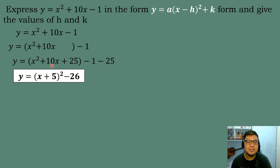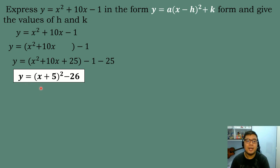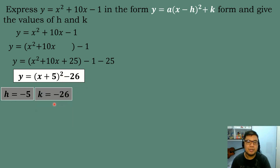Now we factor x² + 10x + 25. Take the square root of x², which is x. Take the square root of 25, which is 5. Take the sign of the linear term, which is positive. So the factor is (x + 5)². Then add the two remaining numbers: −1 plus −25 equals −26. So the vertex form of y = x² + 10x − 1 is y = (x + 5)² − 26. To get h, since the inside value is positive 5, change the sign: h = −5. And k = −26. The vertex is at (−5, −26).